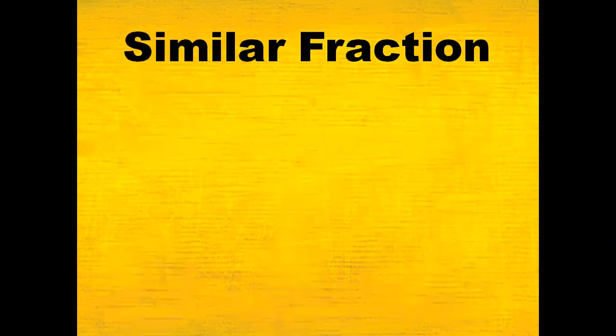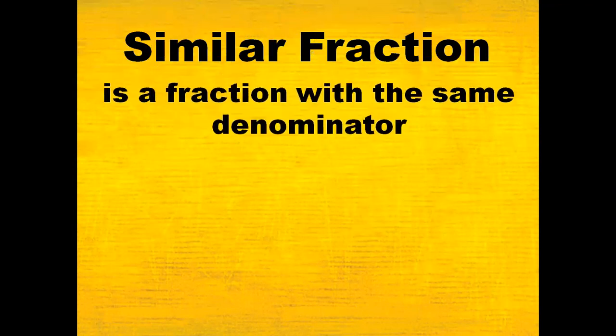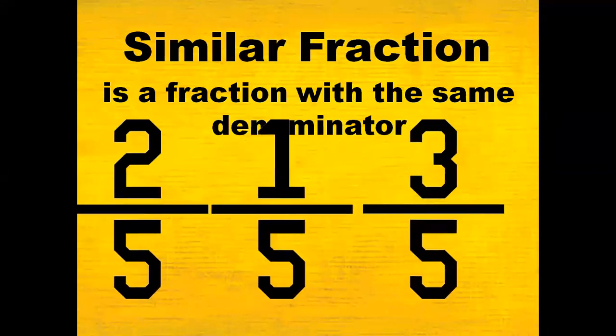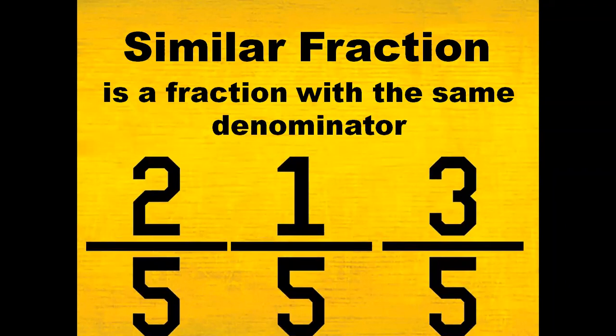What is a similar fraction? A similar fraction is a fraction with the same denominator. For example, two-fifths, one-fifth, and three-fifths. They are similar fractions because their denominators are the same, and that is five.